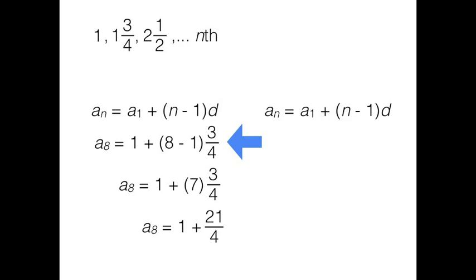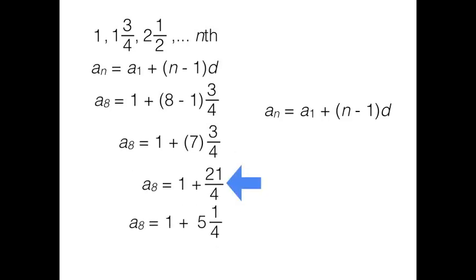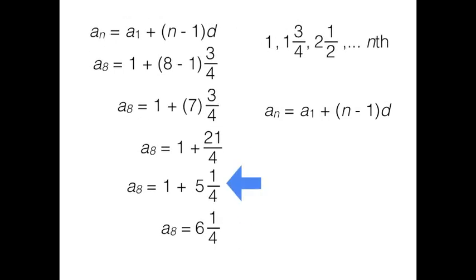First thing we do is subtract one from eight. We get seven three-fourths. You need to multiply those two numbers together. That's going to be twenty-one-fourths. Make a mixed number out of that, and that'll be five and one-fourth. Then we just need to add one, and we get six and one-fourth for our answer.